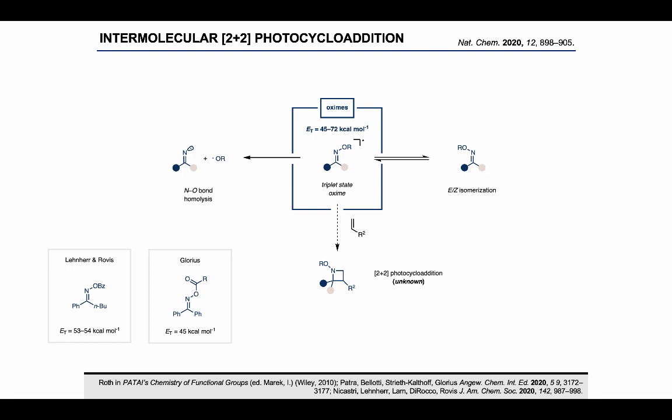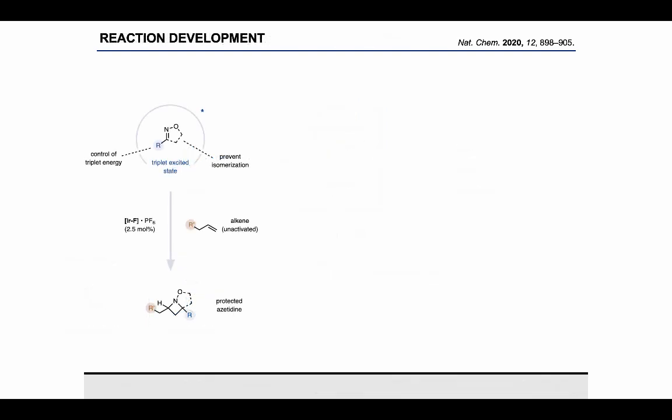We started out by identifying an oxime that would be suitable to engage in an intermolecular cycloaddition reaction. We envisioned that the use of a cyclic oxime would avoid competing isomerization, while the oxime substituent would likely allow us to tune the triplet energy of the substrate but also its reactivity to engage in an intermolecular cycloaddition process with an alkene to access the desired azetidine. Since we're not sensitizing the alkene component in this reaction, we should in principle be able to use completely unactivated alkenes in this case.